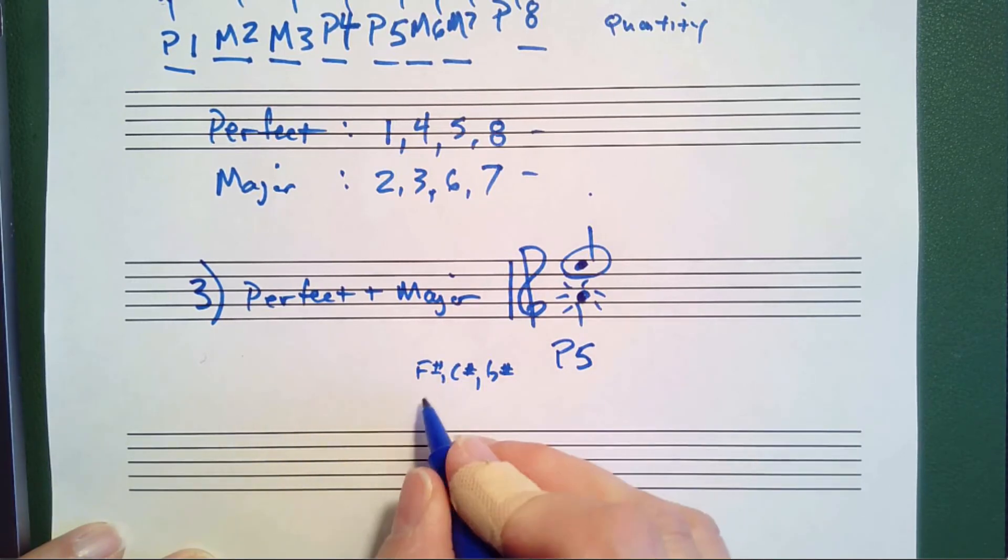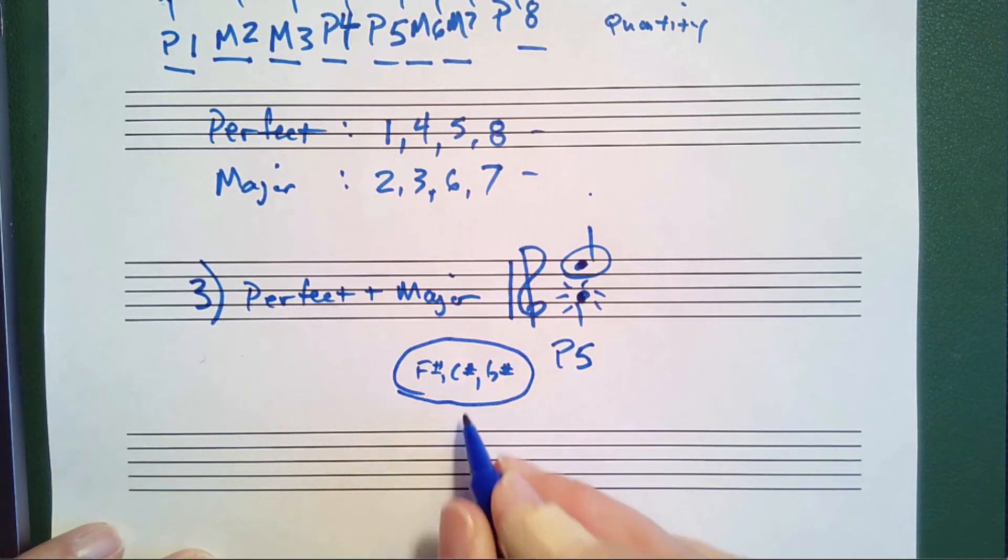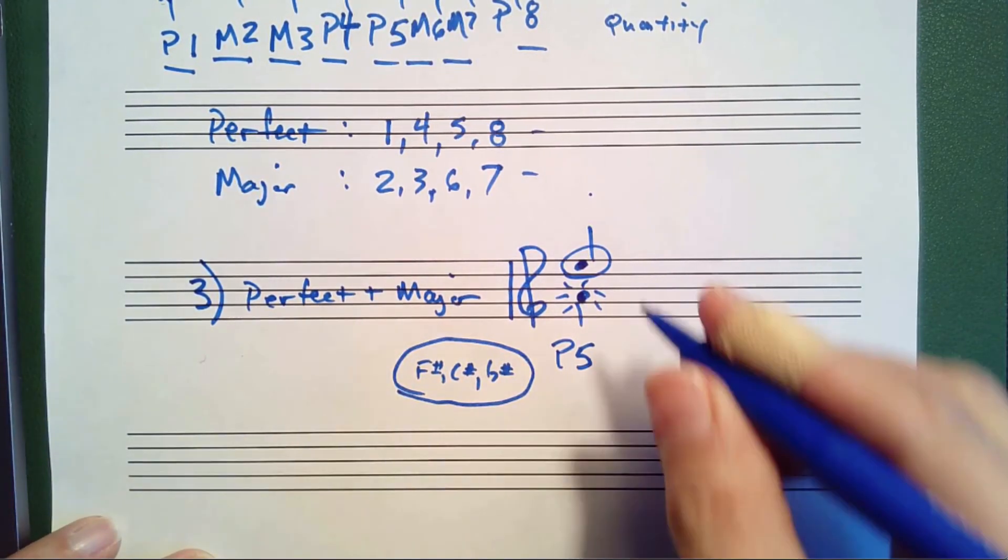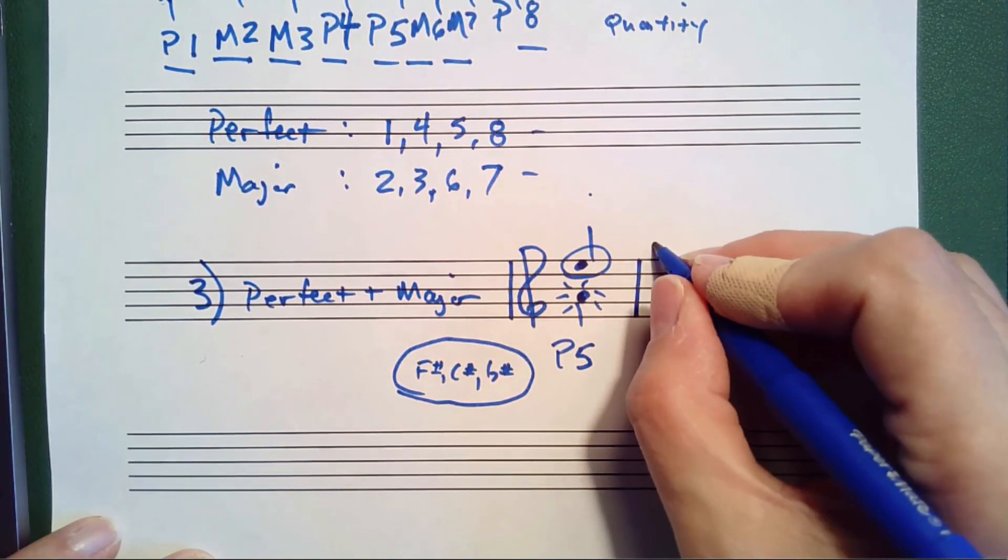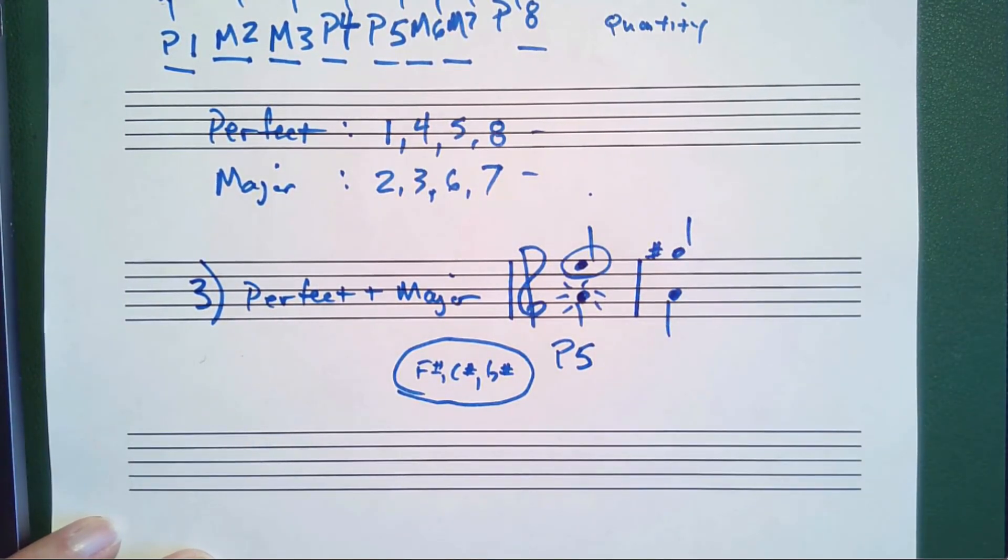Let's keep looking at A since we can see the key signature right here. If I saw this note to this note, my first step would be to count A, B, C, D, E, F, G. This is a seventh.